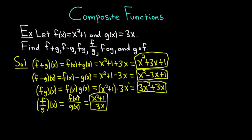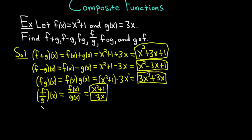Now we've reached the harder part: f∘g. I'll switch to blue to change up the color. We have (f∘g)(x) — that's how you read it. By definition, this is equal to f of g of x. It's interesting: you say 'o' when you see the circle, but when you see the parentheses you say 'of'. So (f∘g)(x) equals f of g of x.